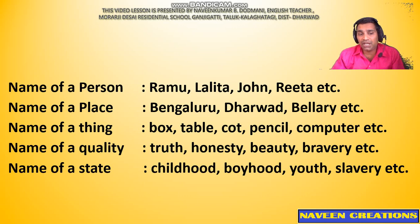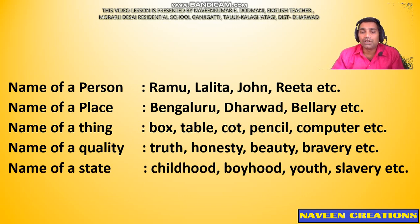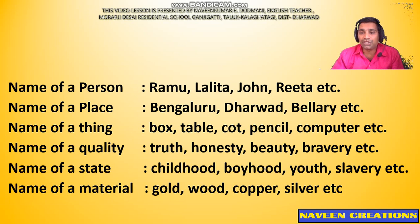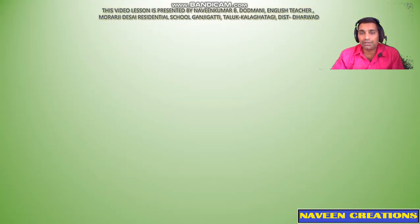The name of a state also comes under the category of noun: childhood, boyhood, youth, slavery, etc. The name of a material is also considered a noun: gold, wood, copper, silver, etc., are examples for this.